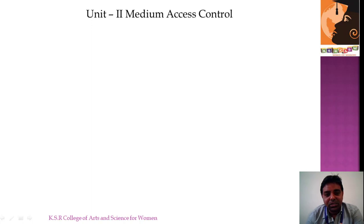We are going to discuss Unit 2, which is entitled Medium Access Control. This is where wireless gadgets try to take access control over the medium through which they are going to send the data.